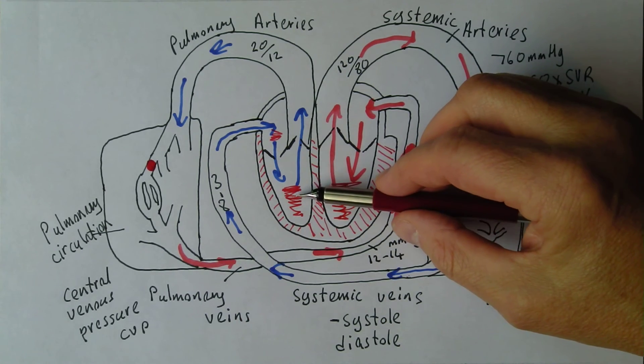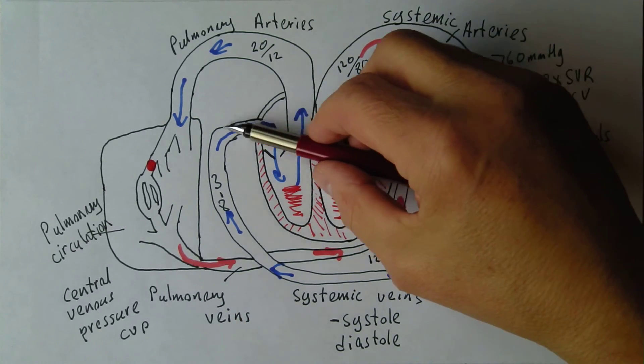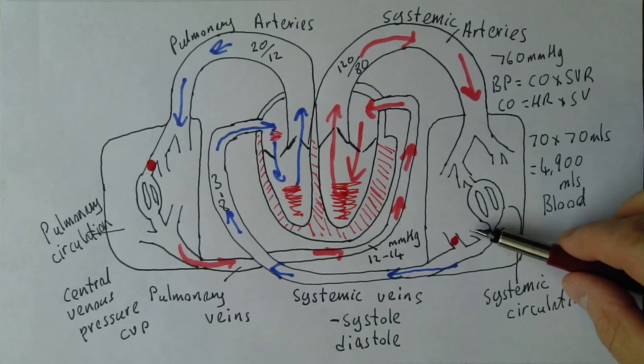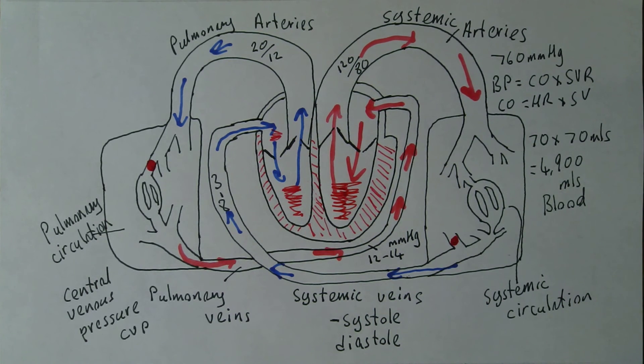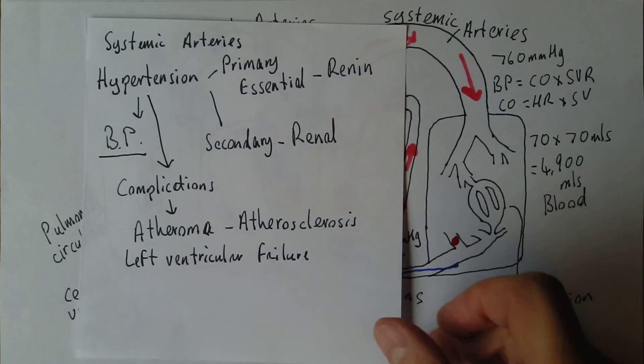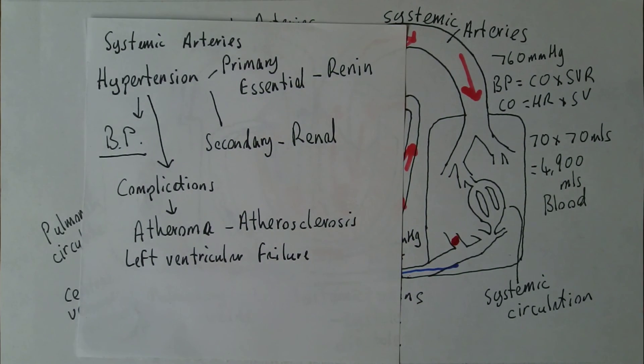So the left ventricular failure can result in pulmonary edema, just the same way as the right ventricular failure means the blood is going to dam back and that can cause pulmonary edema. If you follow the circulation back this time, you follow the path of the congestion. And left ventricular failure does not have a good prognosis. It's a very serious condition.